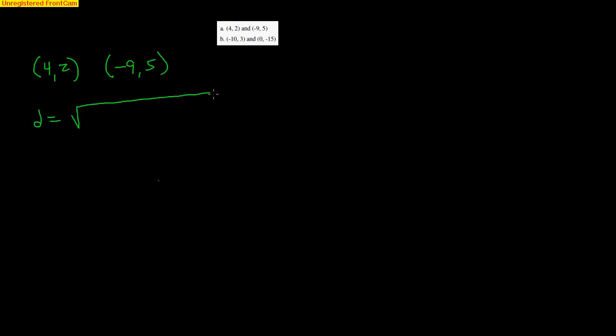So let's do a couple examples here. I know that these problems are kind of small to see. I apologize. But letter A, there's 4, 2 and negative 9, 5. So the distance is going to be the horizontal distance, the difference between 4 to negative 9. And you can do that in your head, actually. That's 9 and 4 is 13. But it'd be 4 minus negative 9 squared. And notice, that's going to become a 13. And then the vertical distance is from 2 to 5. And that's easy. The difference between 2 to 5 is 3. But it'd be 2 minus 5 squared.